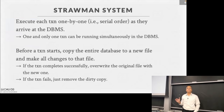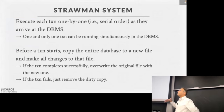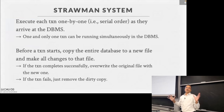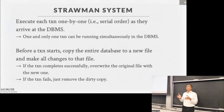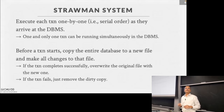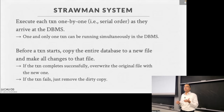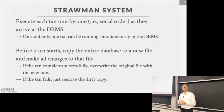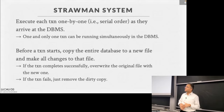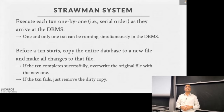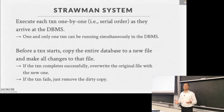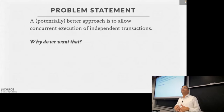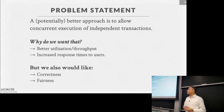One naive solution is to run only one query at a time — queue everything up and run one query at a time. Another approach is to make a copy of the entire database before a transaction starts, make all changes there, and overwrite if it completes successfully. Both of these give some correctness but are really bad from a performance perspective — a very slow database system. Today when you go to Amazon checking out your cart, thousands of transactions are happening simultaneously across multiple users.